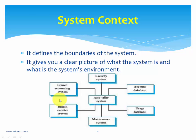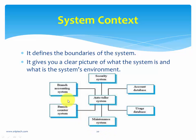Once you have collected the requirements, you bring up the context of a system, which defines the boundaries of the system. It gives a clear picture of what the system is and what its environment looks like. For example, an auto teller system has various subsystems such as a security system, account database system, and usage database system. In a context diagram, you do not mention the subsystems or the interactions between subsystems and the main system — you only show the boundaries of the entire system.